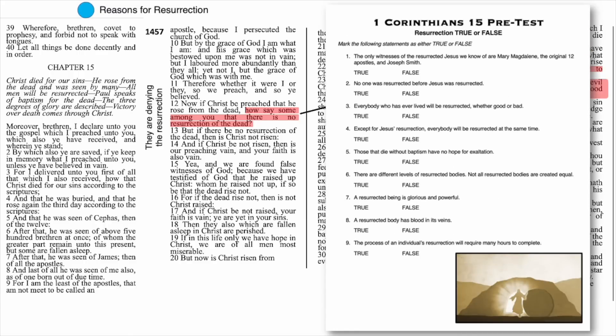I found that a good way to approach this chapter is to invite students to begin with a resurrection true-false handout first. Not only will it help you cover the major principles of resurrection, but it also helps give a nice framework to the lesson and maintains interest. Give them a couple of minutes to go through and answer all the questions based on what they know now about the resurrection, and then we're going to let Paul correct our answers. We'll take each statement and, as a teacher, go question by question, pointing them to the specific verses to correct their answers.